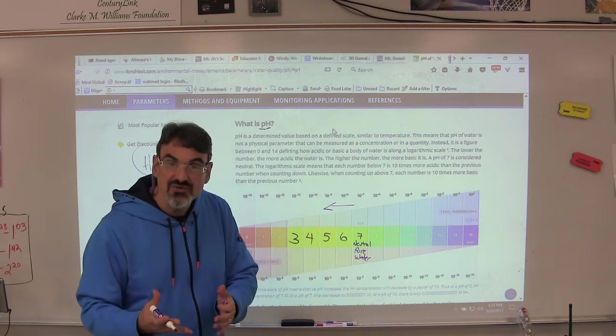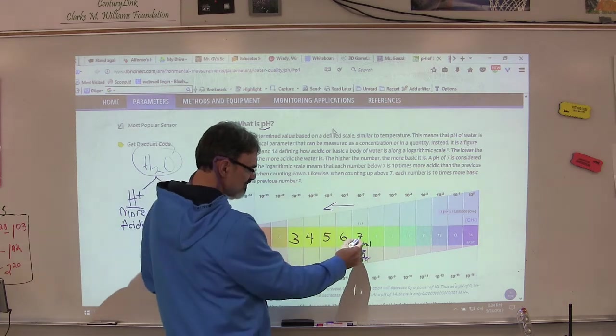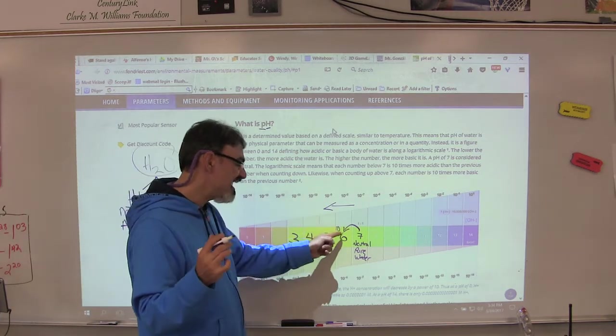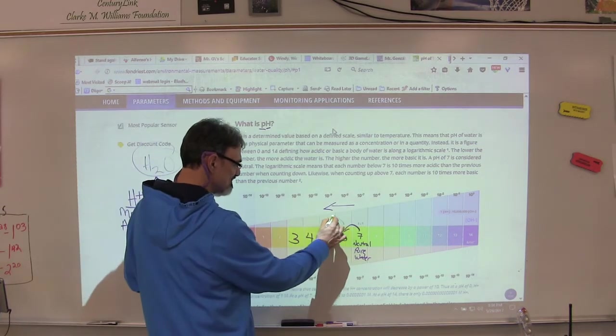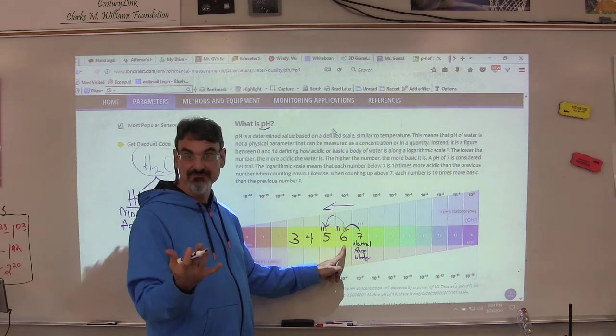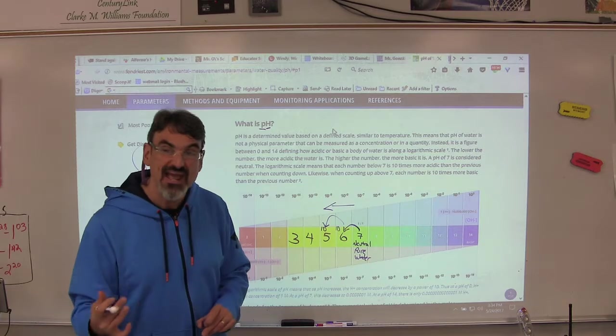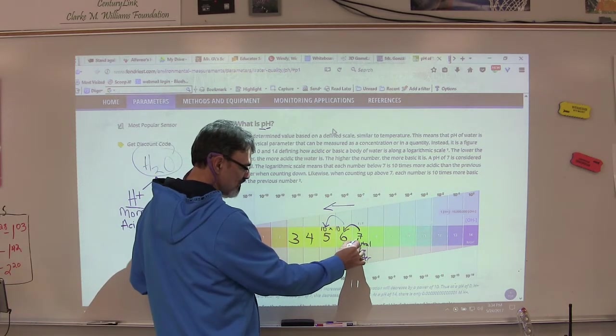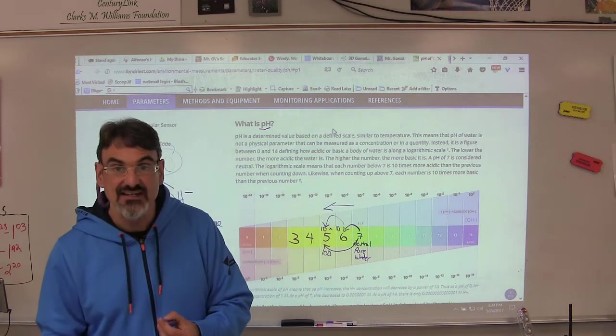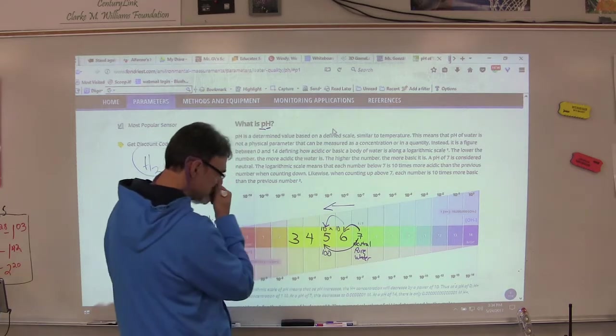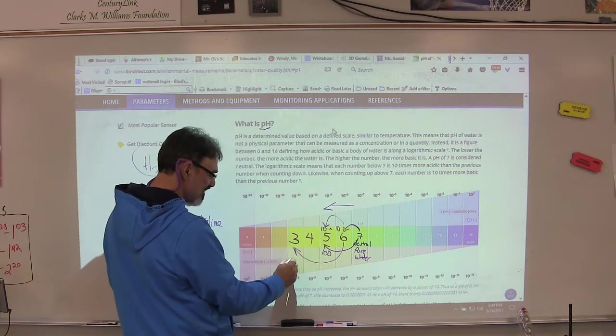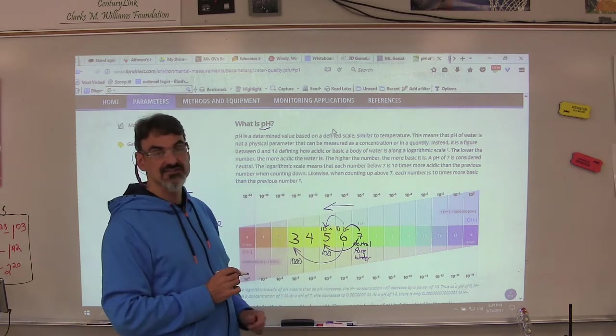The reason this is called the logarithmic scale is because it tells you how much stronger each number is. If I go from seven to six, a liquid with a pH of six is ten times more acidic than water. If I go from a six to a five, the five is ten times more acidic than the six. If I'm going from seven to five, this is ten times ten, so a pH liquid of five is a hundred times more acidic than one of seven, than pure water. And it just keeps going. If I'm going from six to three, I've got ten times ten times ten times ten - a three is a thousand times more acidic than a six.